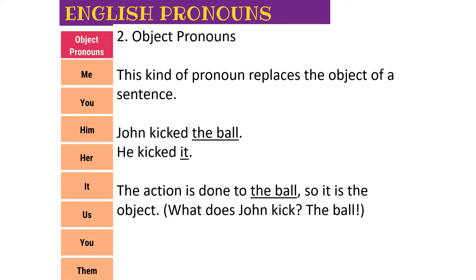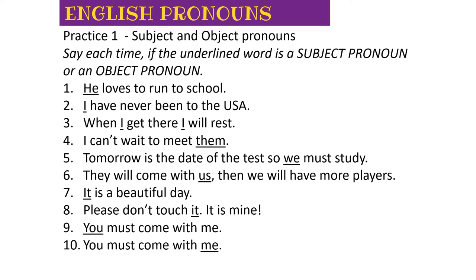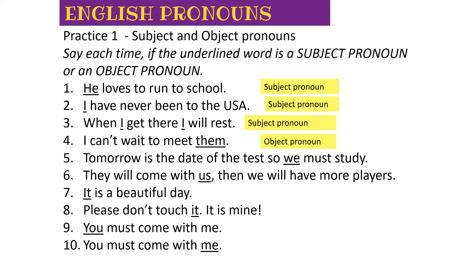Let's go through some examples. Look at the underlined word and identify what it is. If I go too fast, pause the video and think of the answer first. Number one is a subject pronoun - it's doing the action. Number two is also a subject pronoun. 'He' is always a subject pronoun. 'I' is always a subject pronoun. Number three is a subject pronoun - as I said, 'I' will always be a subject pronoun.